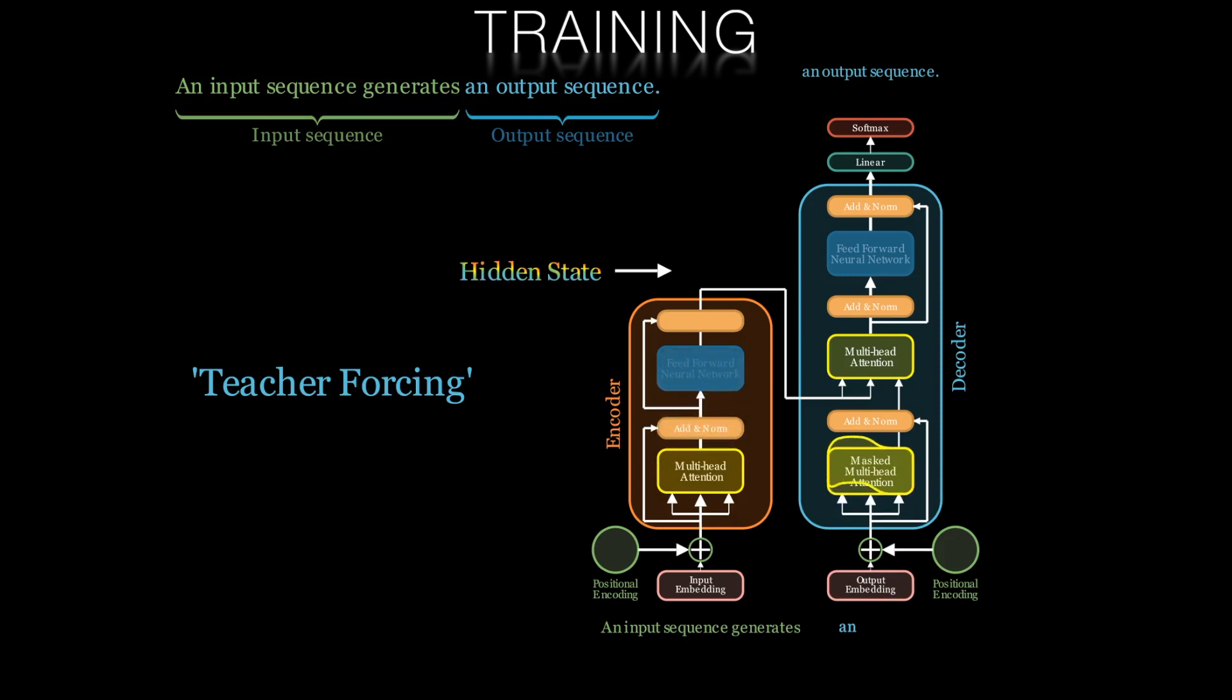Once again we take a forward pass through the transformer, generating the word embeddings, multiplying the embeddings by the attention matrices, and feeding our neural networks. And we generate our second produced word in the sequence. Once again in the early stages of training this is likely to be way off, and we'll use the error to update our weights.